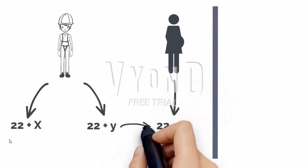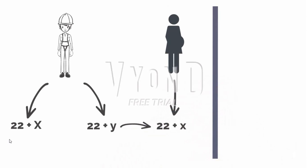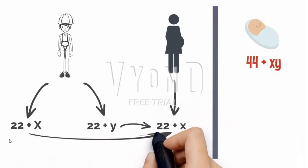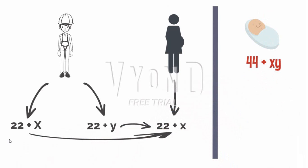During fertilization, if the sperm that contains the Y chromosome fertilizes the ovum, a baby male is produced. And if the fertilization was by the X-containing sperm, a baby female is produced.